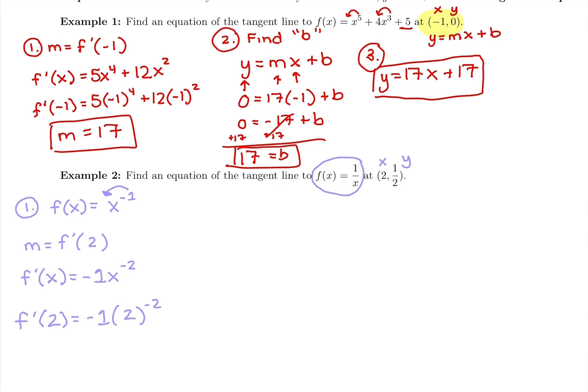I can plug it in just like this. Negative 1, parentheses 2, x to the negative 2. And that's totally fine. You should get the same answer. Or you could take a second and you could rewrite this and write it as negative 1 over x squared. Negative 1 over 2 squared is going to be negative 1 over 4. Either way, you get a slope of negative 1 fourth.